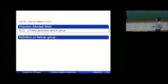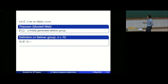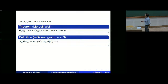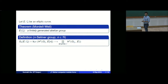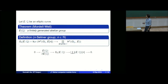That's how we come across the Selmer group. The n-Selmer group of an elliptic curve: you fix an integer n, and the n-Selmer group is defined to be this kernel of a Galois cohomology group — a global Galois cohomology group with coefficient E[n], the n-torsion points of the elliptic curve. For each prime L, you have this restriction map via the decomposition subgroup G_{Q_L}, and looking at the kernel gives the n-Selmer group.